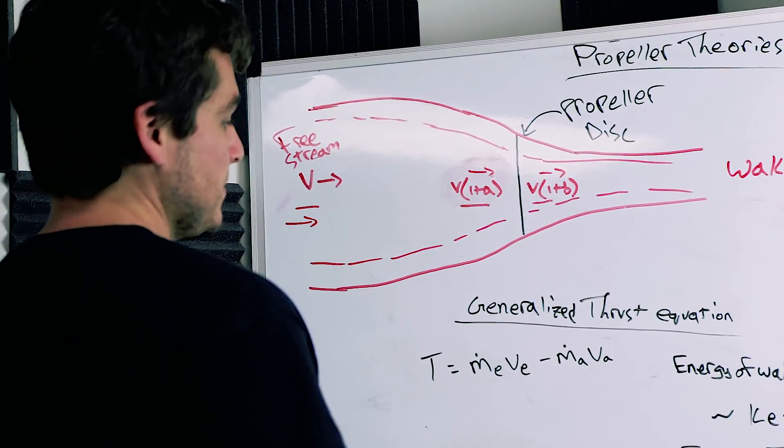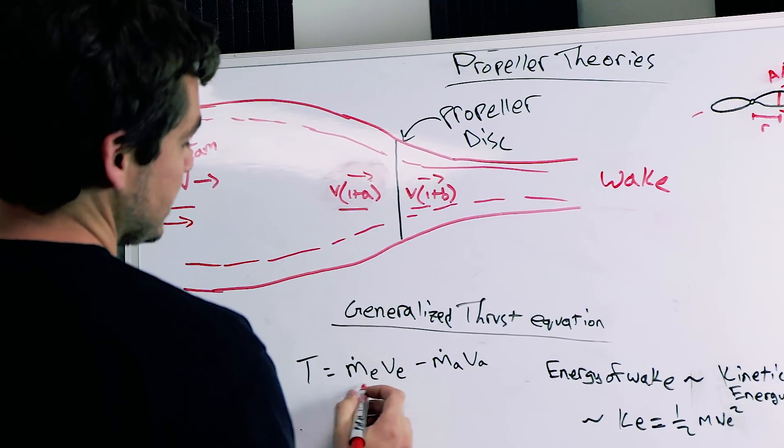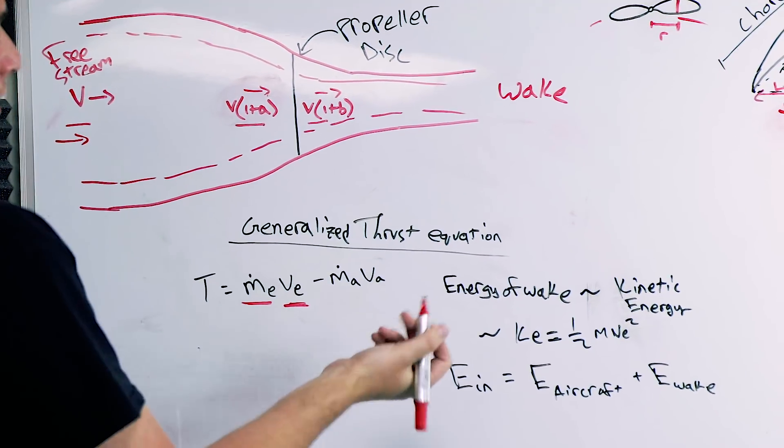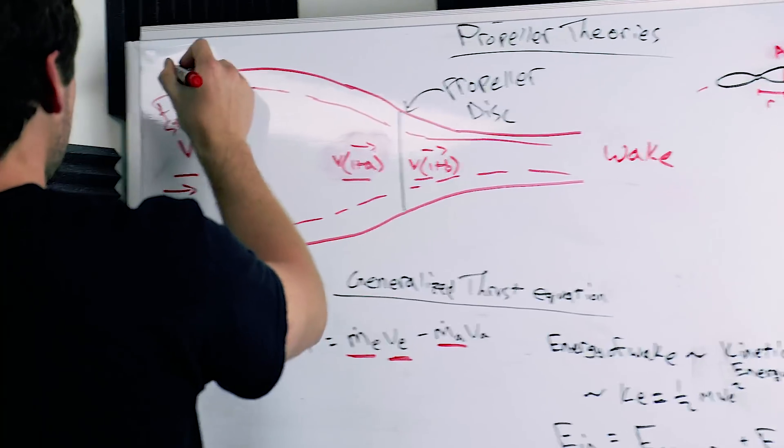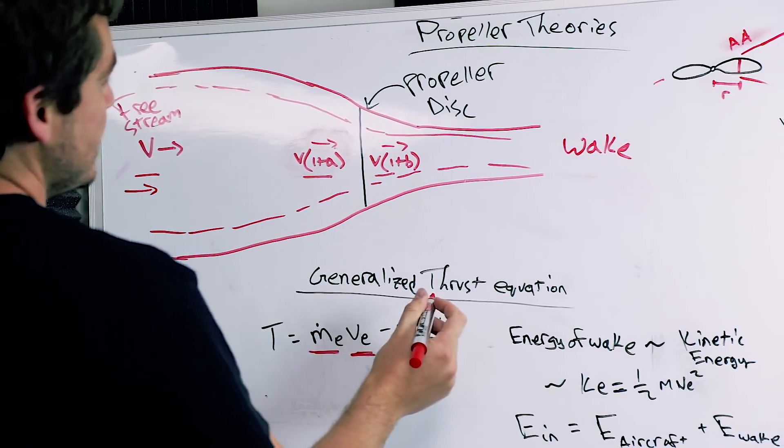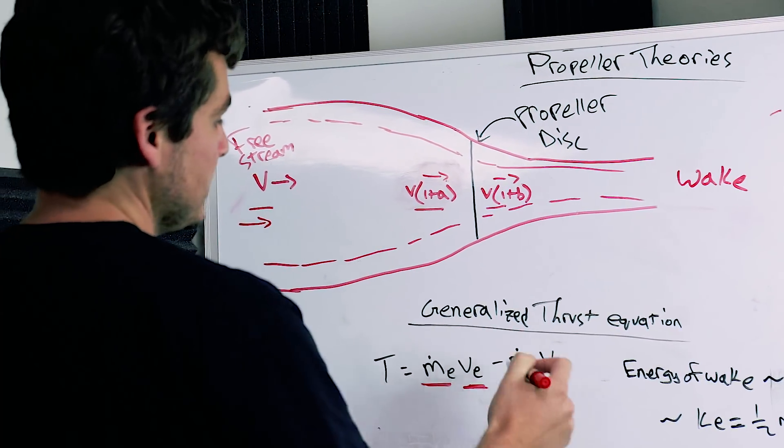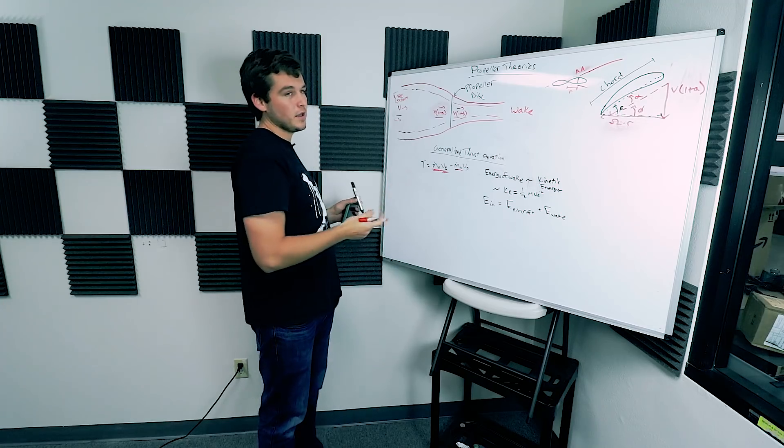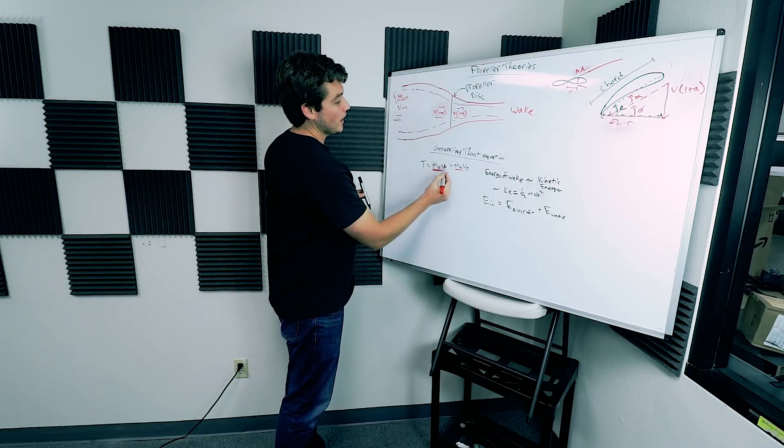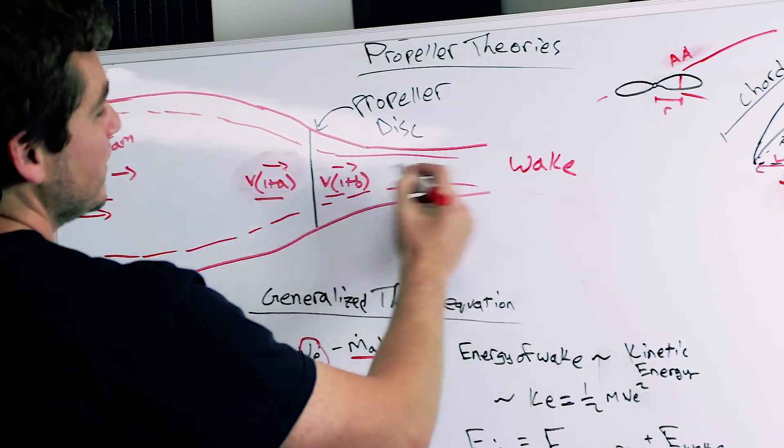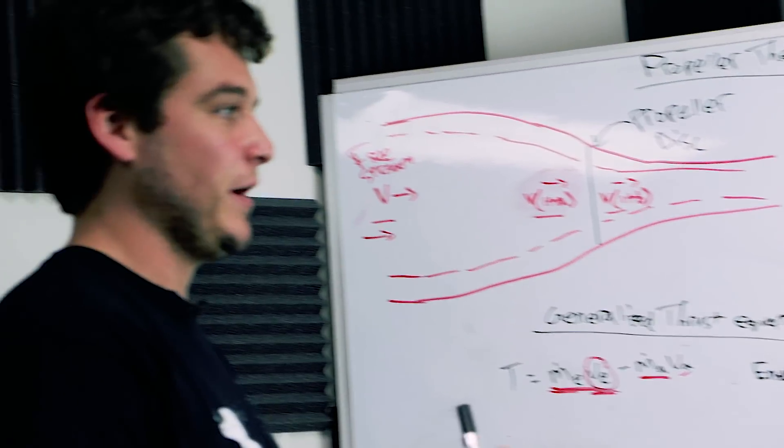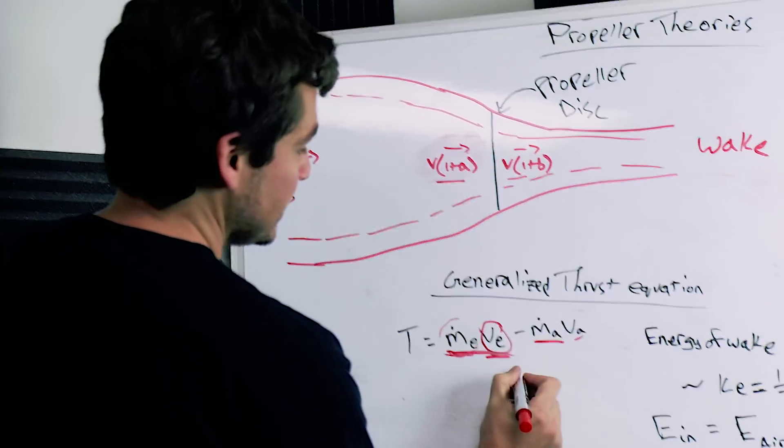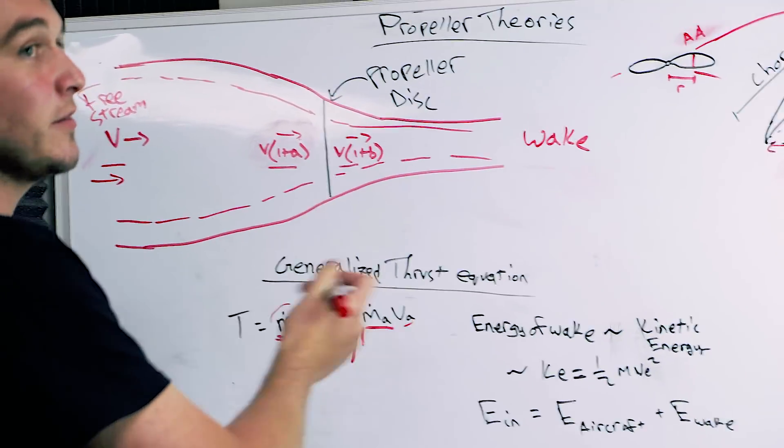Now we can look at a generalized thrust equation. Here this says thrust is the mass flow rate of your exhaust, so your wake right here, times the velocity of the wake, minus the inflow flux mass flow rate, which is right up in here, times the velocity of that. And now in terms of our quadcopters, that's pretty minuscule compared to this part of the equation. So here we see, in a general form, thrust is proportional to the velocity of the wake of your propeller. Now with a 2-inch propeller, since our mass flow rate is not as great due to the small disc area of 2-inch, we really have to accelerate V to get our wake going to create the thrust needed.